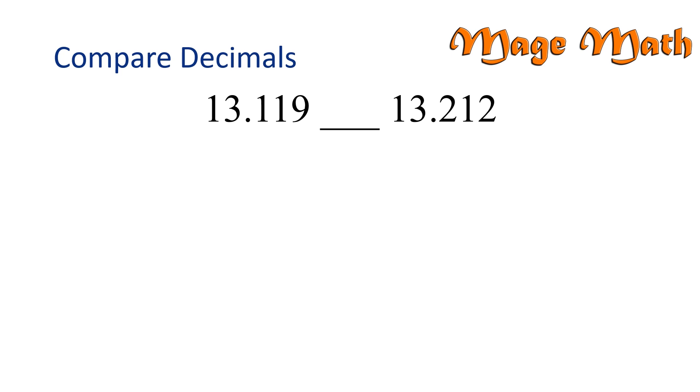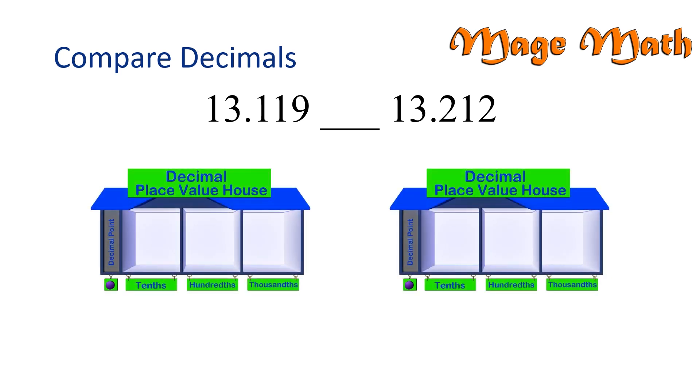So let's put our numbers into place value houses, and we can better understand each digit this way. Both decimal parts have three place values, which we call thousandths, and we can rewrite them as fractions just as they sound. 119 thousandths is the decimal .119, and 212 thousandths is the decimal .212.